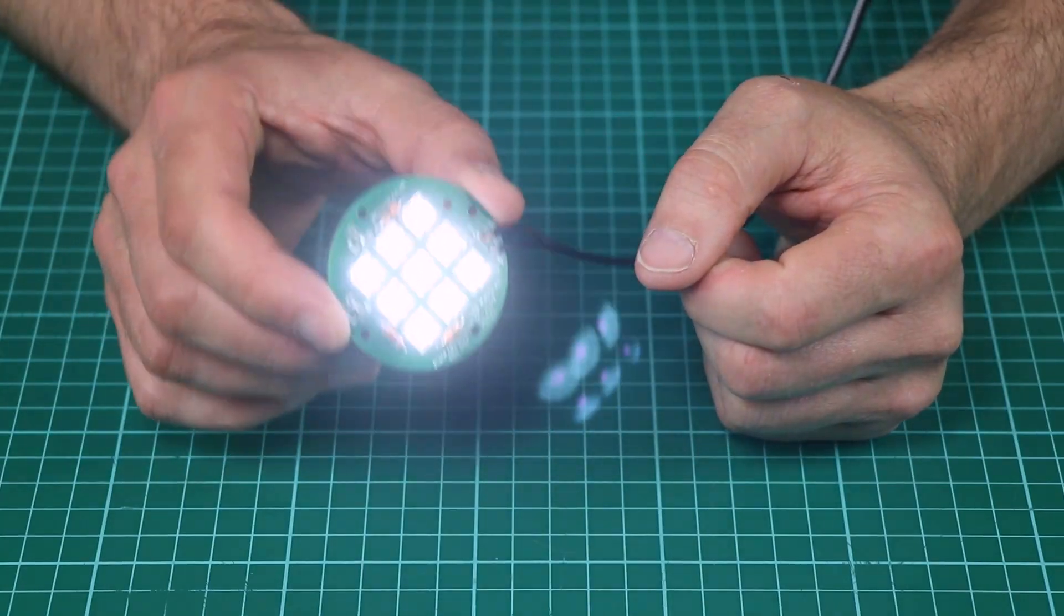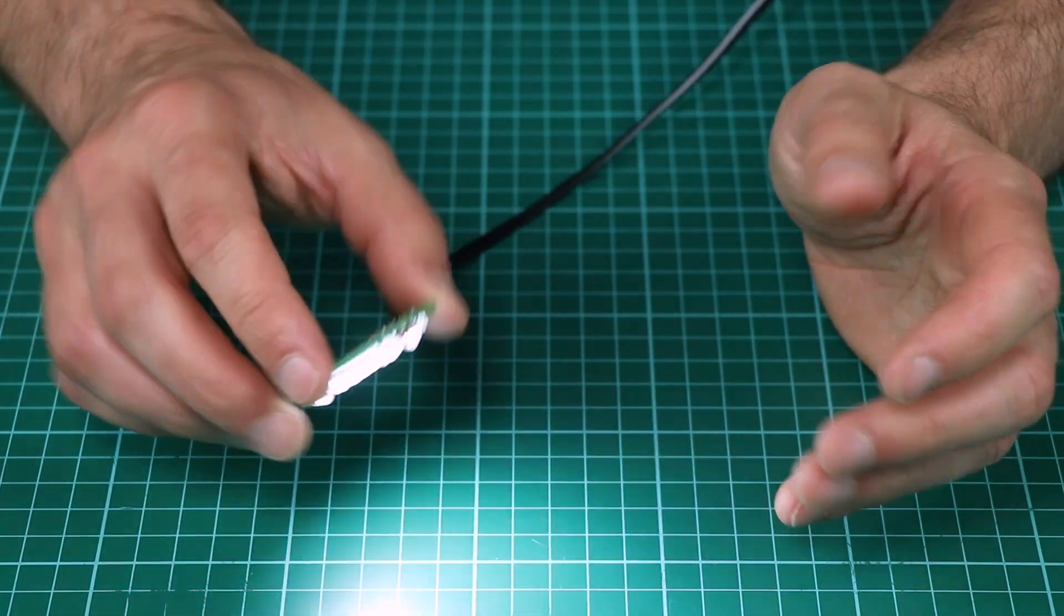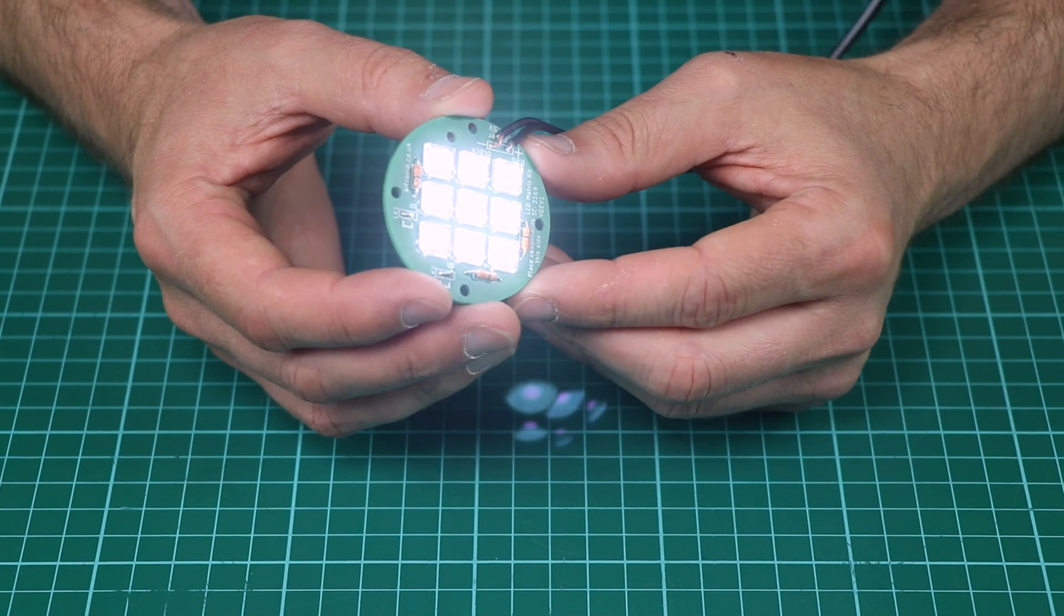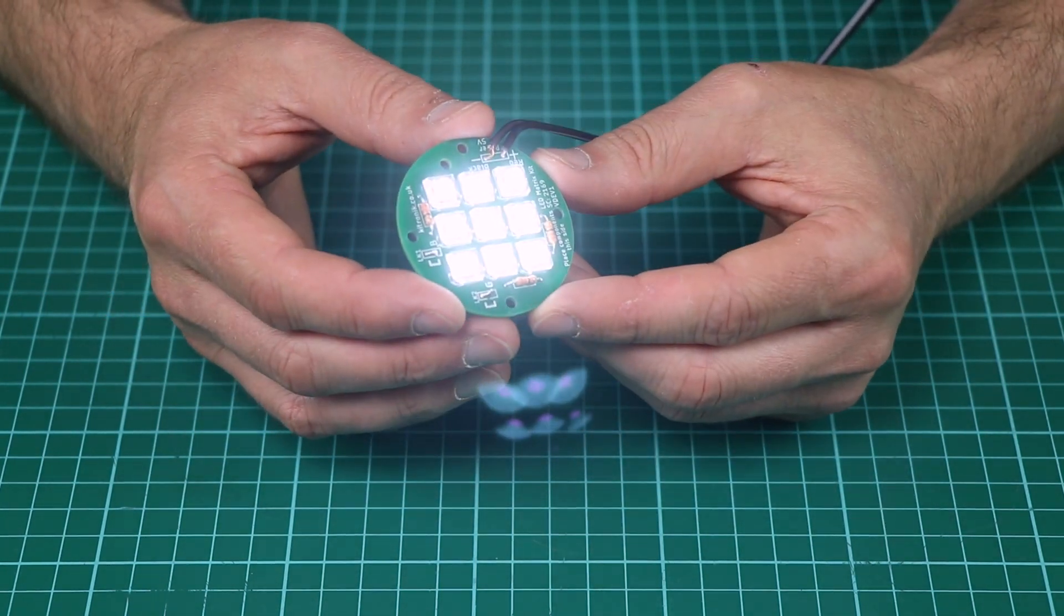Now we can see the module lit up. It's nice and bright and gives a very even light. That's because these nine super flux LEDs have a high output and a very wide viewing angle. It makes it ideal for use in things like lamps or torches.